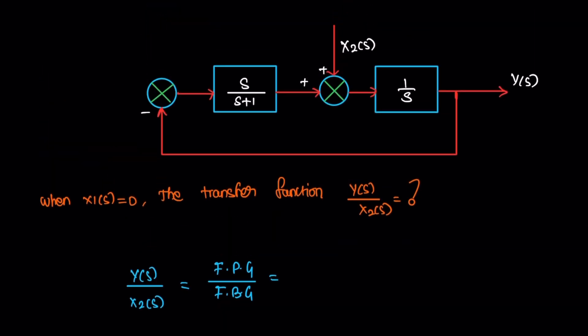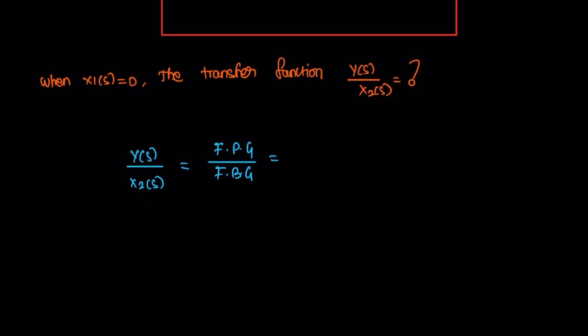For here, there's only one forward path, this one. So the blocks in the forward path is only 1 over s. So 1 over s.